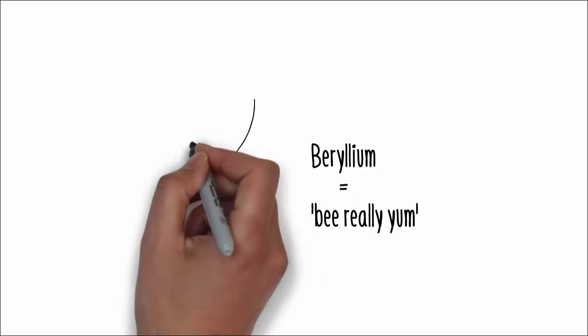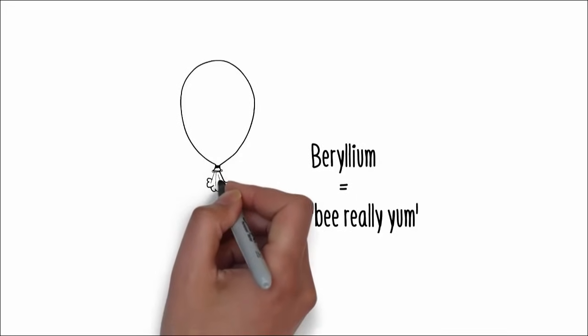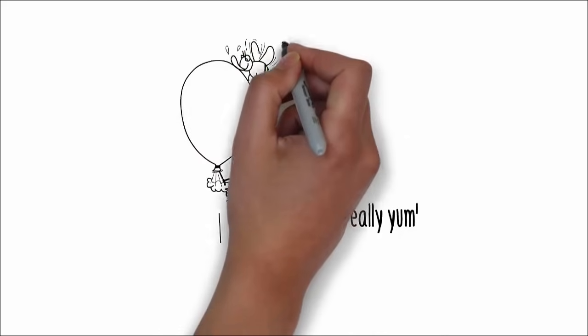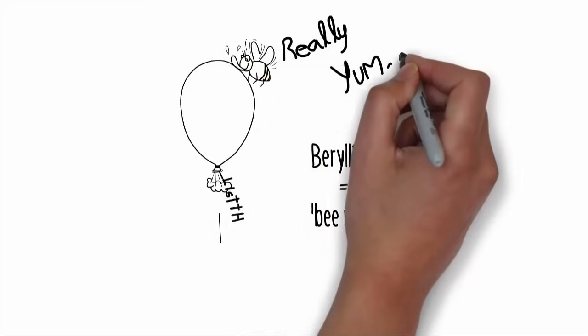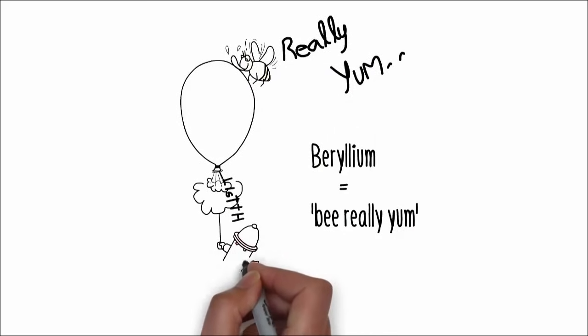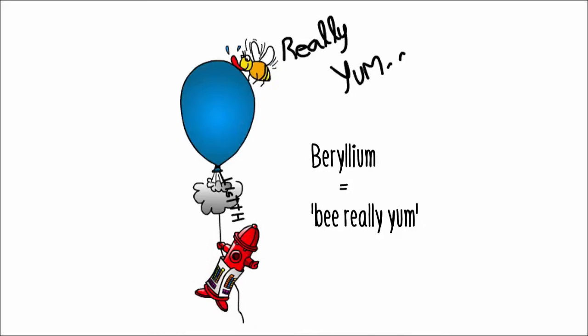The fourth element is beryllium. If you say beryllium slowly, it sounds like be really yum. Picture a slowly deflating balloon. Now imagine an enormous bumblebee lands on the balloon. The bee is the size of a football and has bright yellow and black stripes and buzzes loudly. The bee licks the balloon to have a taste and says, hmm, really yum. It really likes the taste of the balloon. When you picture the bee licking the balloon, you'll think bee really yum, and be reminded of the fourth element, beryllium.